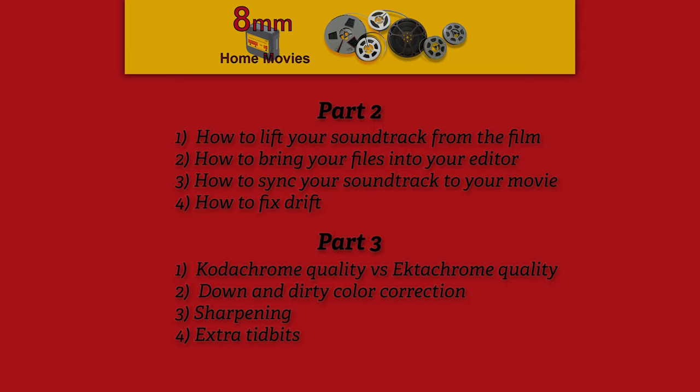In part three, I'll talk about the various types of films such as Kodachrome and Ektachrome, because they vary in quality and will require a little — actually a lot — of extra work on one more than the other. I'll also do a down and dirty color correction, along with sharpening and a few extra tidbits.